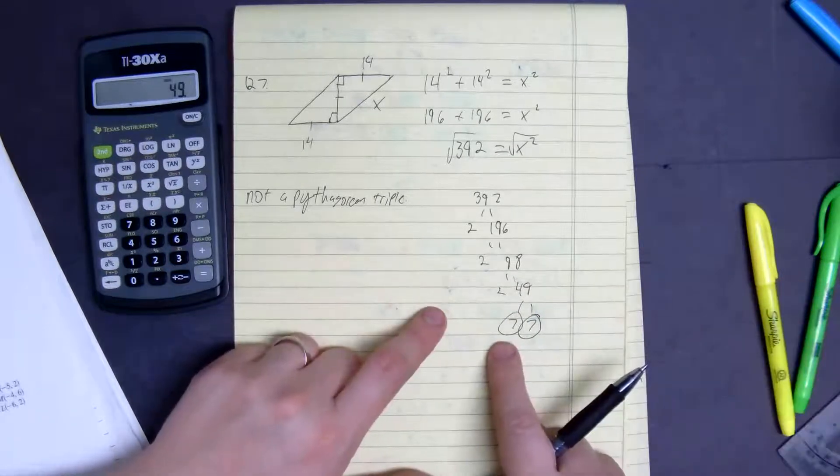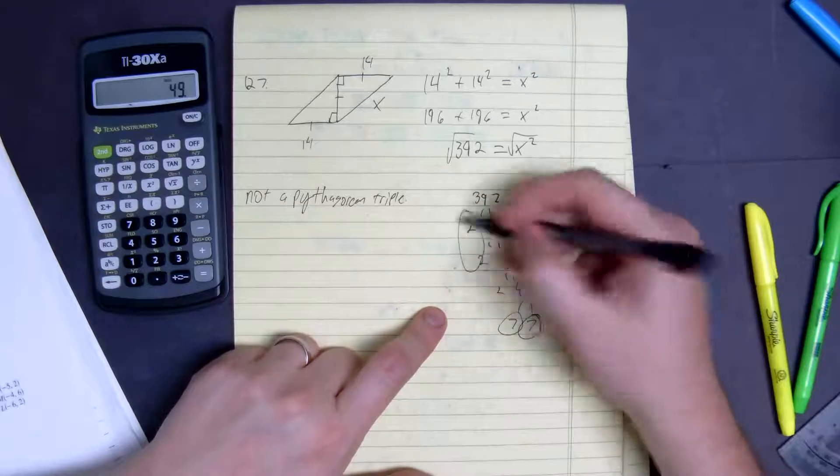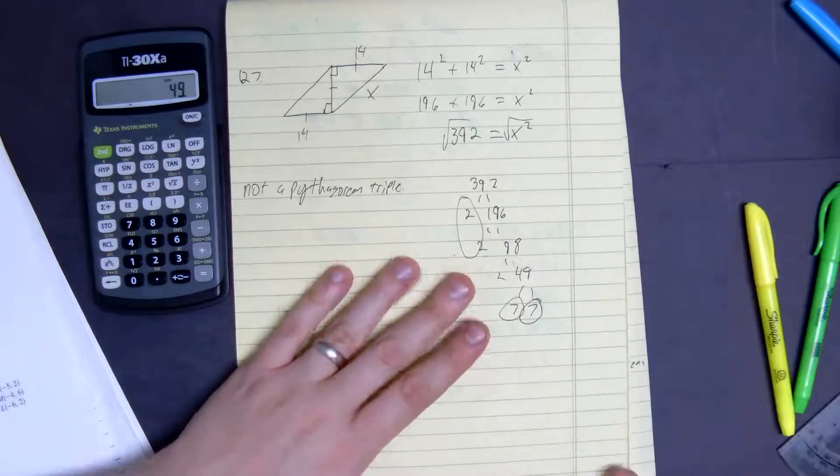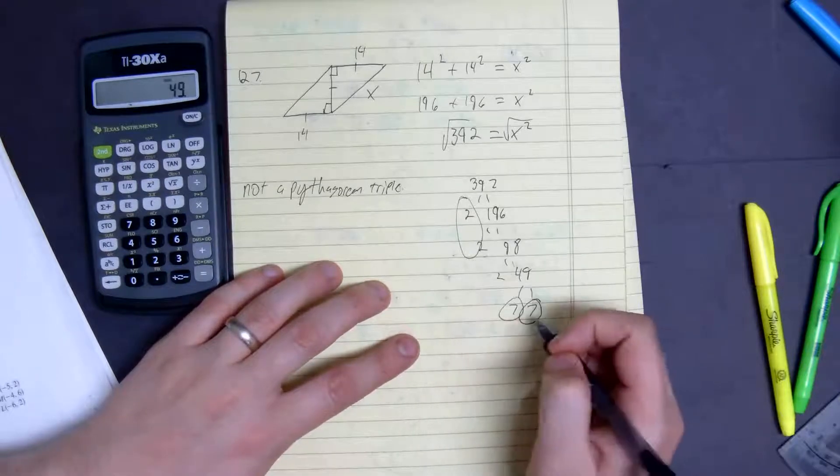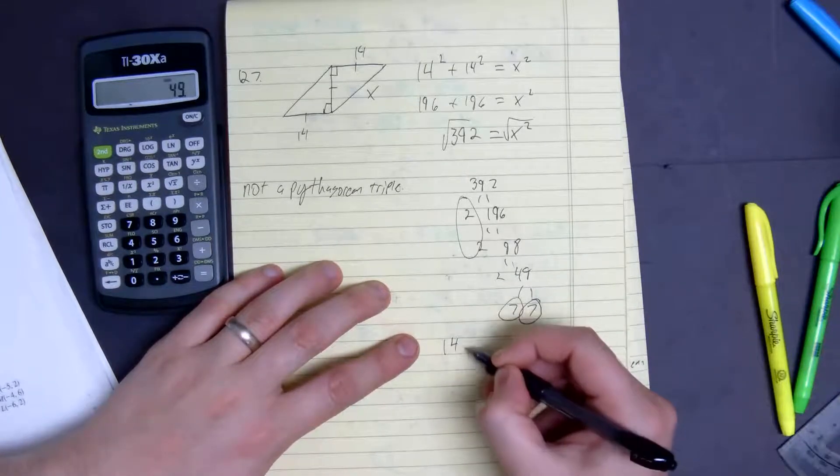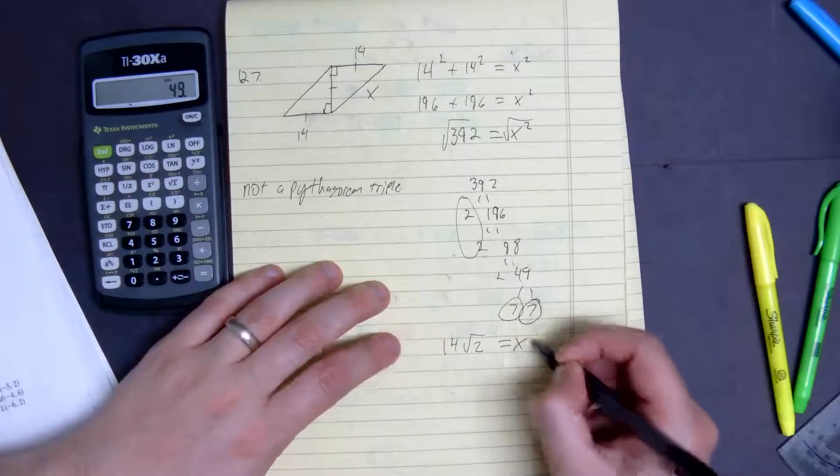So as you can see, we have pairs of 7 and pairs of 2, so our final answer for this question would be the following: 2 times 7 is 14, 14 squared root 2 equals x.